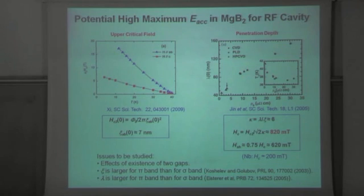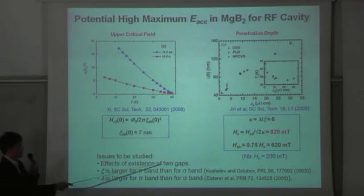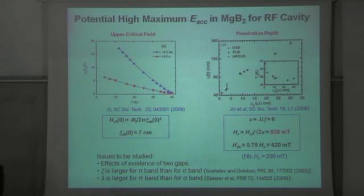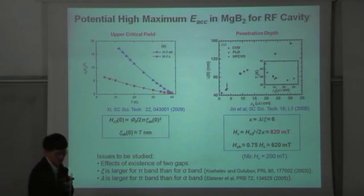And then if you use this expression for thermodynamic critical field, you'll get things like 800 millitesla, which is much larger than the HC for niobium, which is 200 millitesla. Of course, this probably is close to the most optimistic estimate. And in reality, there may be other issues. For example, there are two gaps which could have, I think Alex will tell you that actually that could be a problem. You may or may not be able to get that high value. And so at least the coherence length and the penetration depth are all different for sigma bands and pi bands. So that's something that needs to be studied.